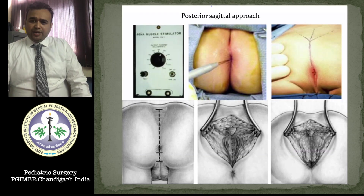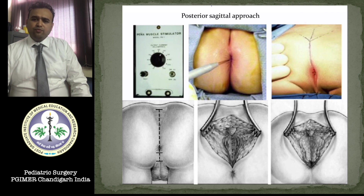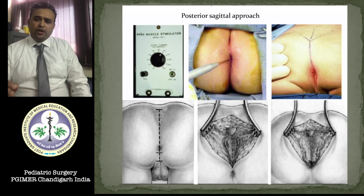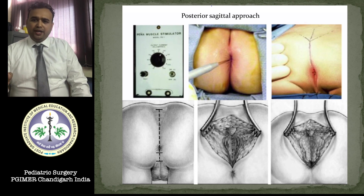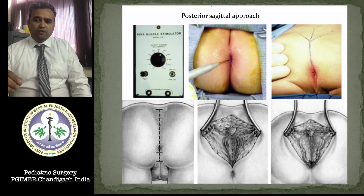When taking a patient for PSARP, initially catheterize the patient with a Foley's. 80% of the time catheterization is successful; in 15–20% of cases the Foley's bulb can enter the rectum via the fistula, and then it must be guided with a guide wire or placed intraoperatively while dissecting the fistula.